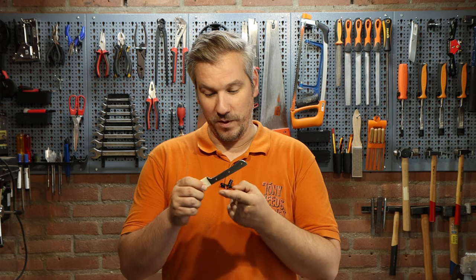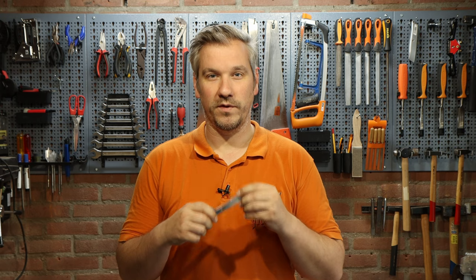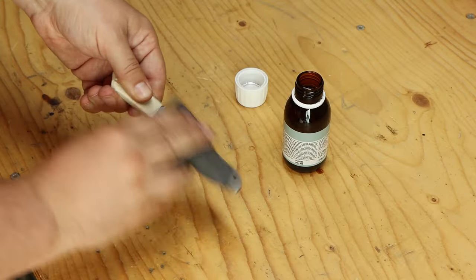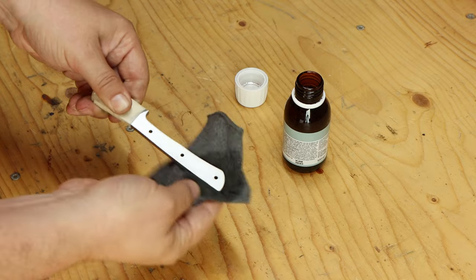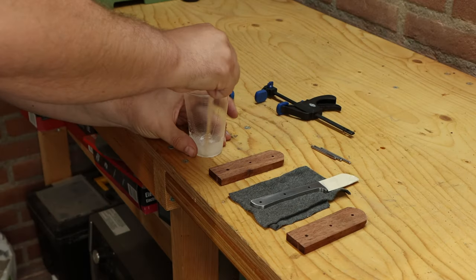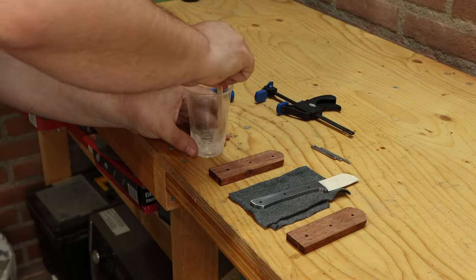All the components are now ready for assembly, so I'm going to degrease the blade first using some acetone, and then I'm going to glue everything together using some 10-minute epoxy, which should give me more than enough time to assemble this thing successfully. At least that's what I thought when recording it. 10 minutes turned out to be barely enough time since I made the mistake that I warned you for when fitting the scales.